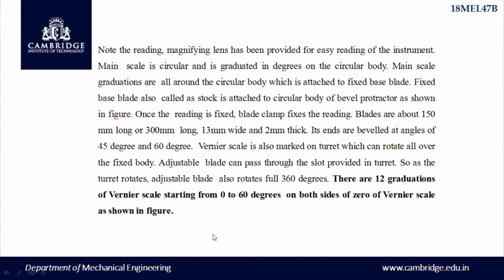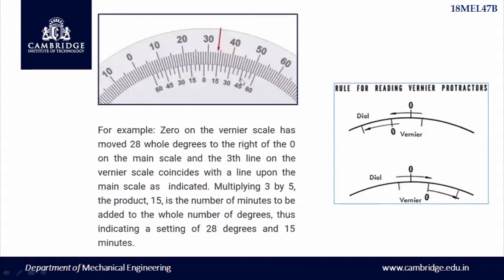There are 12 divisions on the vernier scale starting from 0 to 60 on both sides of the zero of the vernier. From 0 to 60 it will have these 12 divisions: 1, 2, 3, 4, 5, 6, 7, 8, 9, 10, 11, 12 — so each division value is 5 minutes. If the third line is the coinciding one, then 3 into 5 equals 15 minutes, which is shown as 15. This is one example of how to take the reading on the bevel protractor.